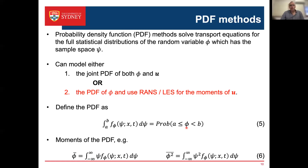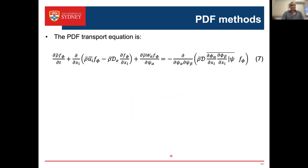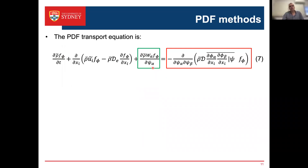Once we have the PDF we know all statistical information about the scalar distribution: the first moment (mean), the mean square (variance), and higher moments as well. The PDF transport equation has an unsteady term, a convective term, and a spatial diffusion term with effective diffusion coefficient D_e. Crucially, the chemical source term — the non-linear term — appears in exact form rather than as a filtered or averaged approximation. That is the big advantage of PDF methods.